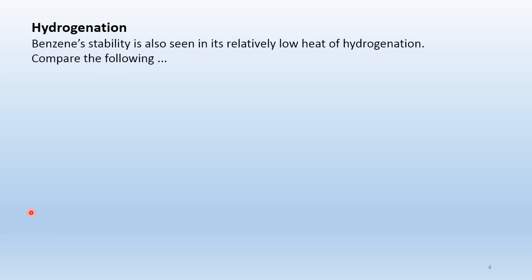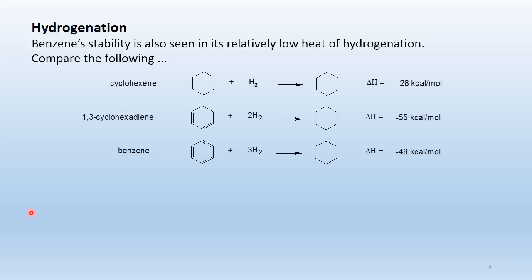Benzene's stability is also seen in its relatively low heat of hydrogenation. Cyclohexene with one C–C pi bond is hydrogenated to cyclohexane and releases 28 kcal/mol. 1,3-cyclohexadiene with two C–C pi bonds requires two equivalents of hydrogen and releases 55 kcal/mol — almost exactly double, instead of the expected 56.